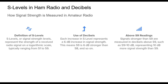In ham radio, signal strength is quantified by S-levels, which range from S1 (very weak) to S9 and beyond (extremely strong). The S-level scale is logarithmic, meaning each increase in S-level corresponds to a significant change in power. Specifically, moving up one level — say from S8 to S9 — means the signal is now 6 dB stronger. If the signal exceeds S9, further strength is recorded in decibels above S9, often displayed as S9+10, S9+20, etc. Understanding this is important for judging signal clarity and strength over frequencies and distances.